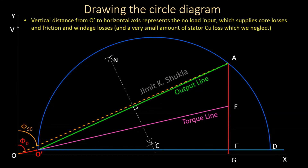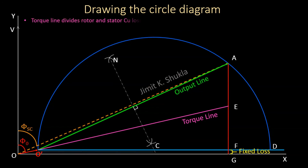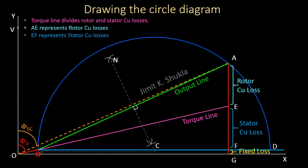The vertical distance from O' to the horizontal axis represents the no-load input, which supplies core losses, friction and windage losses, and a negligible amount of stator losses. The segment FG represents the fixed losses of the motor. The torque line divides the losses such that AE represents rotor copper losses and EF represents stator copper losses. This completes the circle diagram for the induction motor.